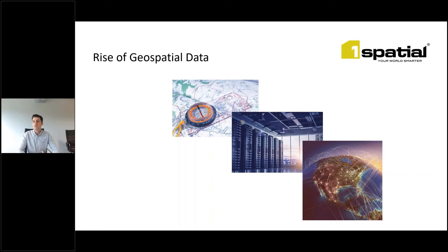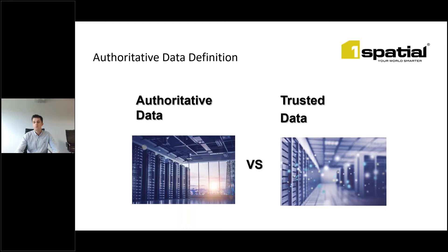Not only has this changed how people are accessing geospatial data, but also how geospatial data is captured. This has created a vast array of different data sets, from location intelligence data collected through people's smart devices or smart credit cards, to the building of open source data sets such as OpenStreetMap. Amongst the rapidly increasing variety of geospatial data sources we often hear the term authoritative data, or important and trusted data.